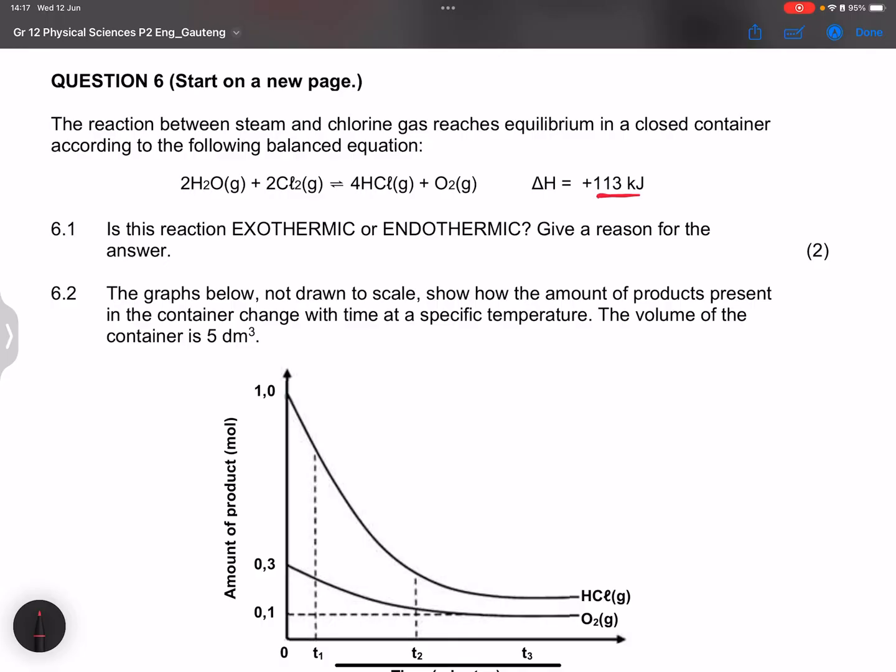They say is the reaction exothermic or endothermic? So remember delta H greater than zero means that the forward reaction is endothermic. And they say give a reason for the answer. Remember that the potential energy of the products must be greater than the reactants or we can just simply say that delta H is positive. So that is the reason why.